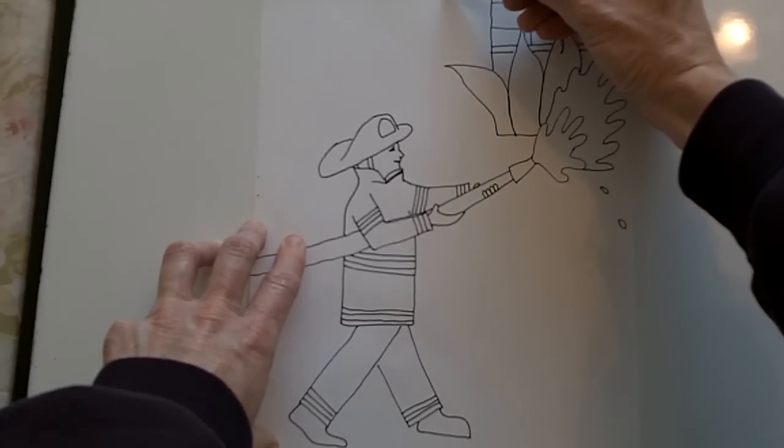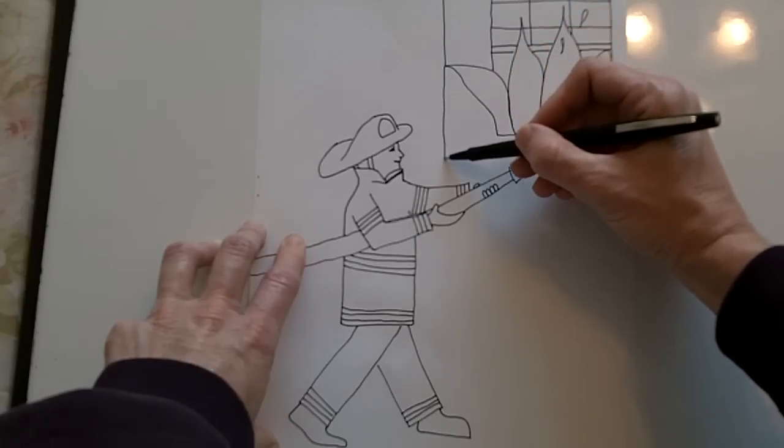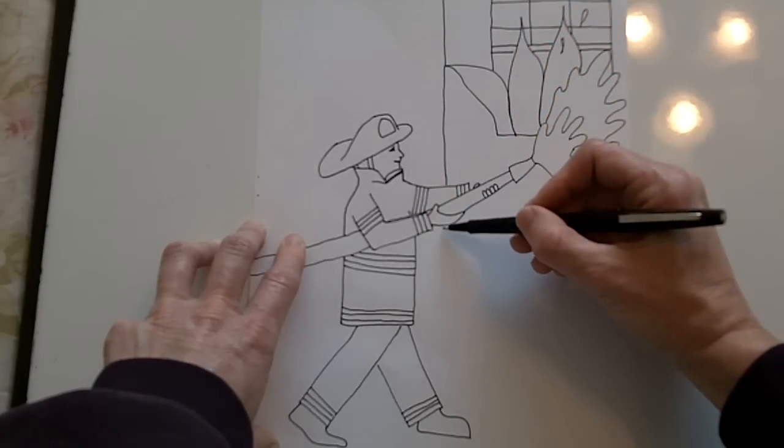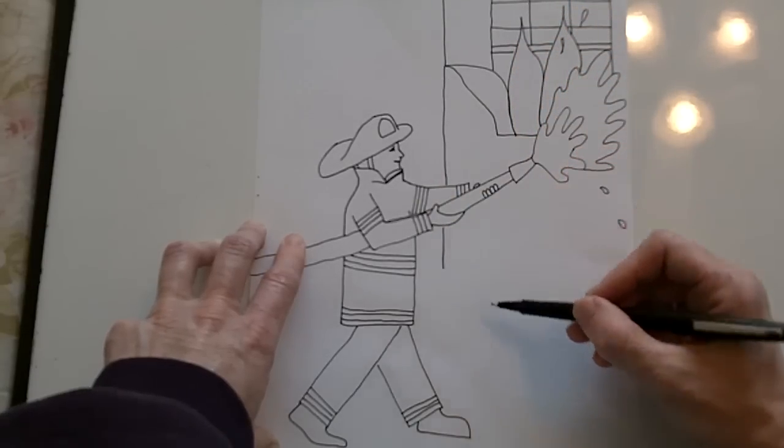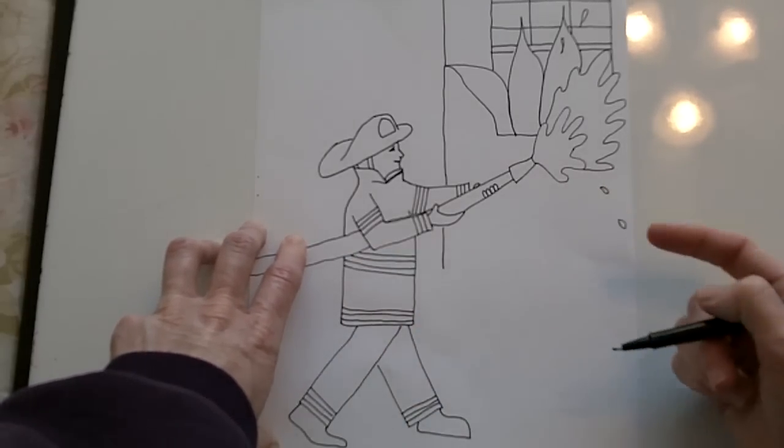Right over here we're going to draw the side of the building. Just comes straight down behind the fireman and then stop right about there, right about the middle of his jacket.